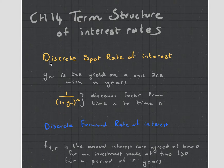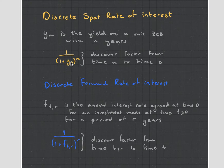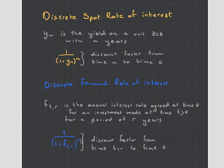On the screen we've got something called a discrete spot rate of interest and a discrete forward rate of interest. These are the two things we're going to look at now. Even before we read the definitions, you'll notice that the formulas are very similar, except for one difference: the discrete forward rate has got this extra time dimension.